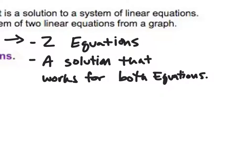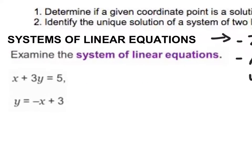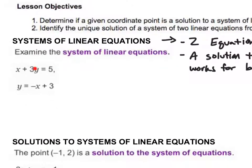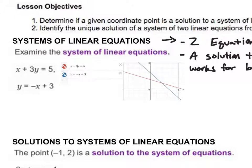I'm going to look at these two linear equations: I have the equation x plus 3y equals 5, and I've got the equation y equals negative x plus 3. What I'm going to do is plug those into Desmos and graph these to show you something. Once I have graphed both of these equations, I just typed them simply into Desmos.